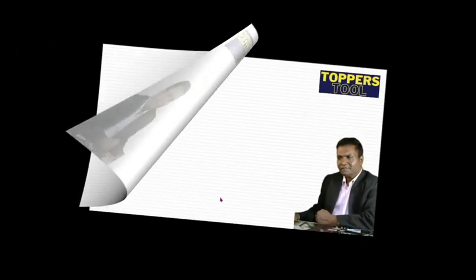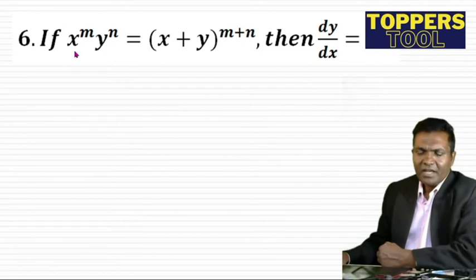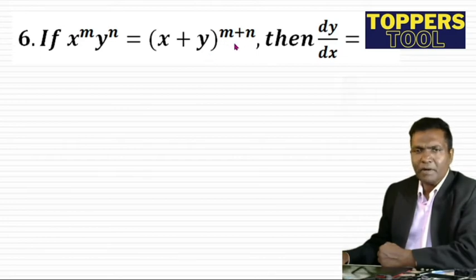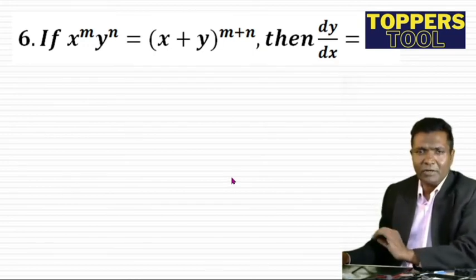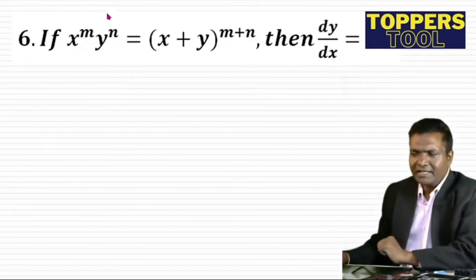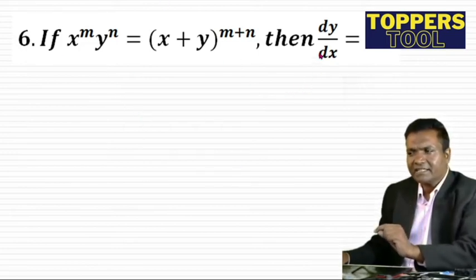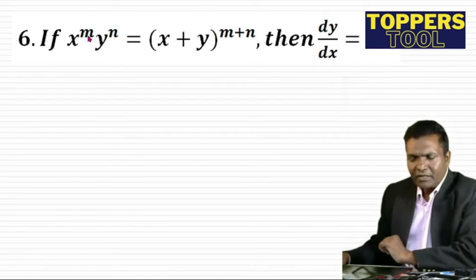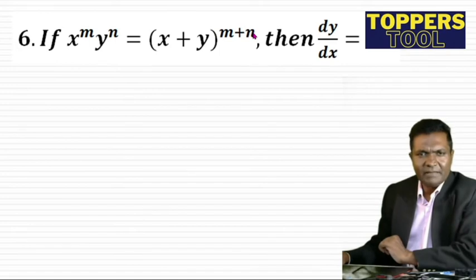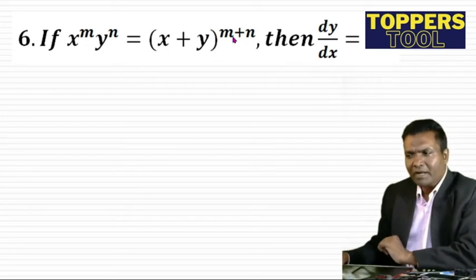Next question: if x^m · y^n = (x + y)^(m+n), then dy/dx is how much? This looks complicated but I will prove that the result is always dy/dx = y/x. Whenever x^m · y^n = (x+y)^(m+n), where the total power on the left equals m+n on the right, the answer is always y/x.